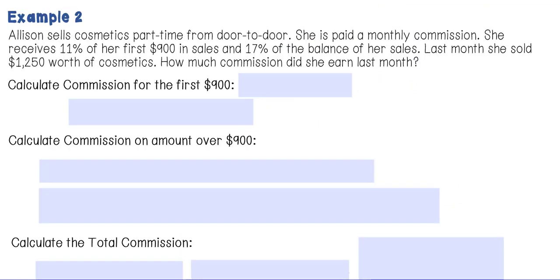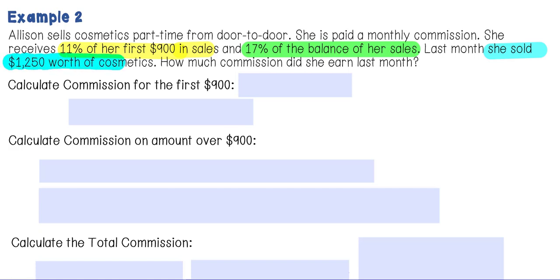In the second example, Allison sells cosmetics part-time door to door. She is paid a monthly commission: she receives 11% of her first $900 in sales and 17% of the balance of her sales. Last month she sold $1,250 worth of cosmetics. How much commission did she earn last month?